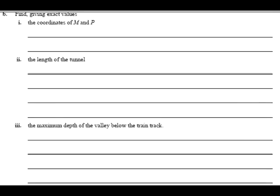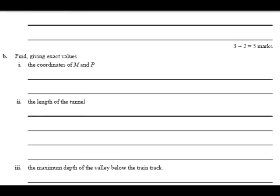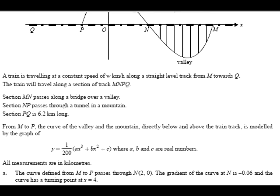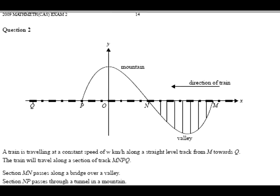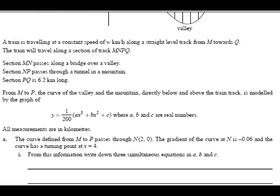Part 3 asks us... The maximum depth of the valley below the train track. Okay. So, we come back up to our diagram. We say, okay. We see that... We see where the valley is. And you want to find... The coordinate of F... at the turning point. Right? And... Do you know the turning point? Oh, yes you do. It was told... in part A. Turning point... at... x equals 4. Right?